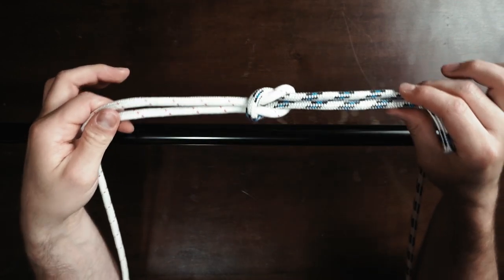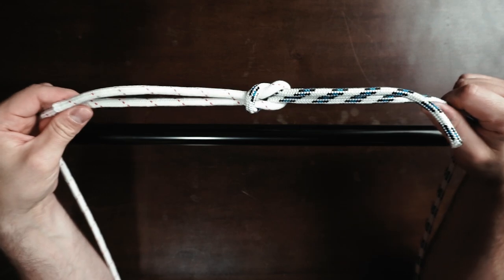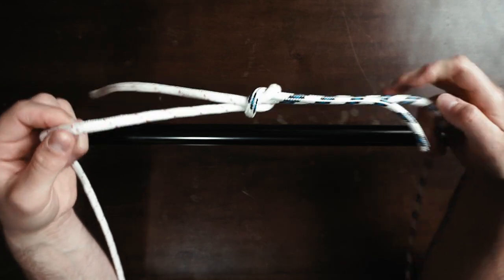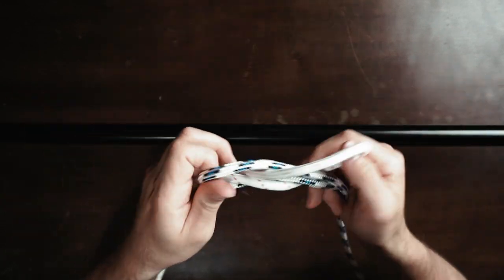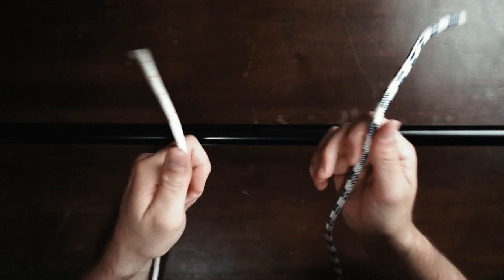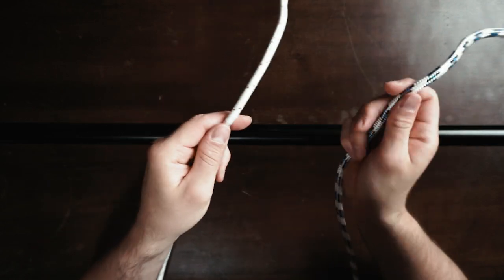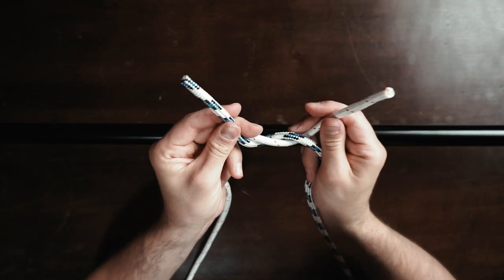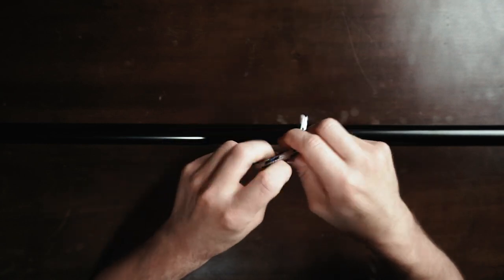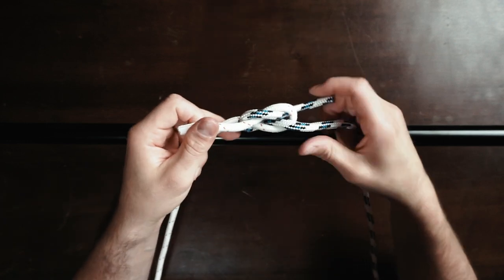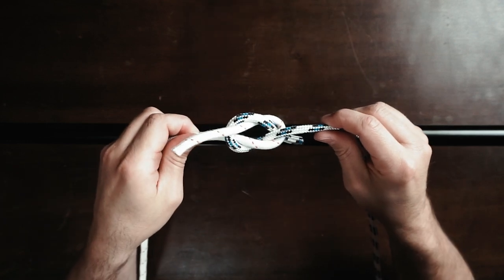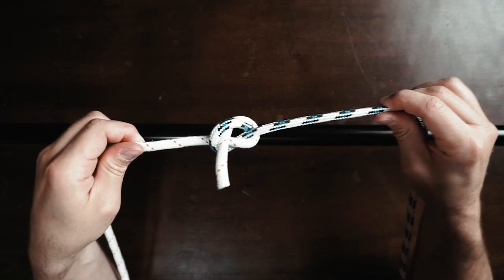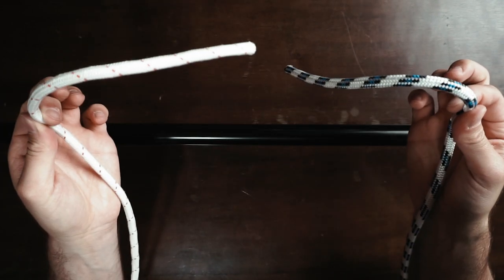Now this knot connects two ropes very very strongly. If you don't follow this rule, and for instance you do right over left, and again right over left, you get something like this. And you see if I pull, this unties very easily.